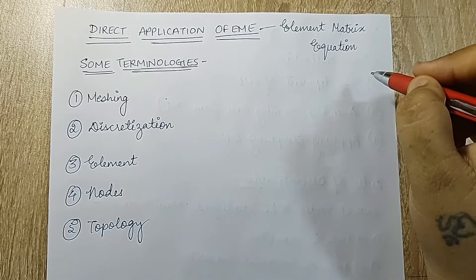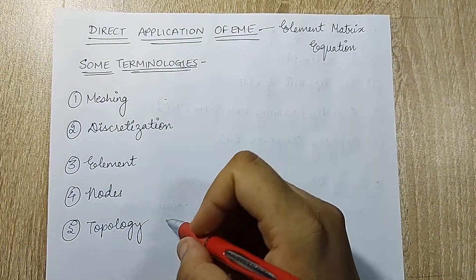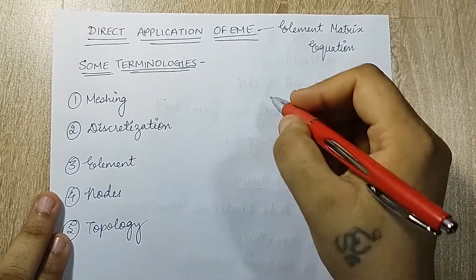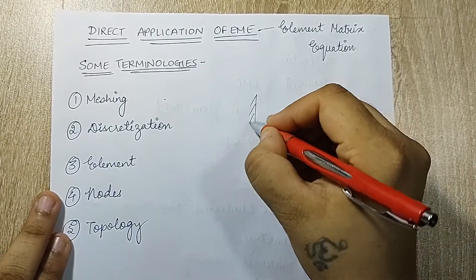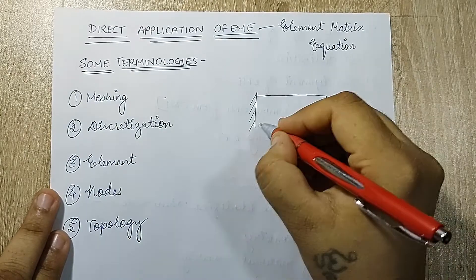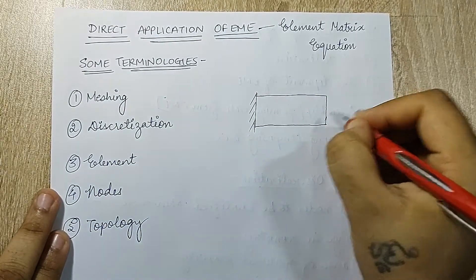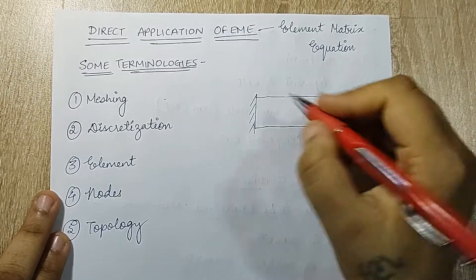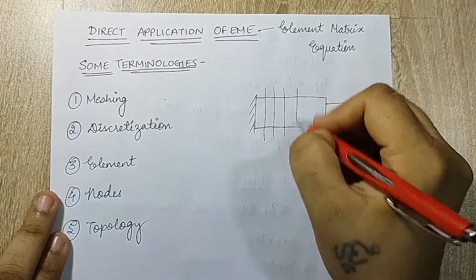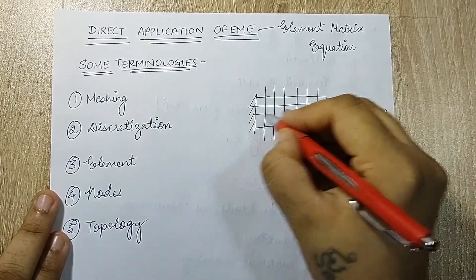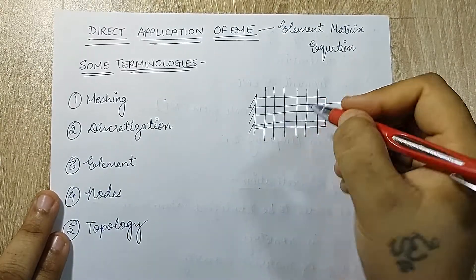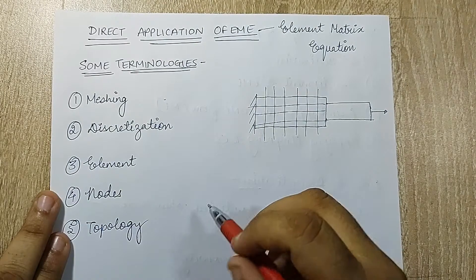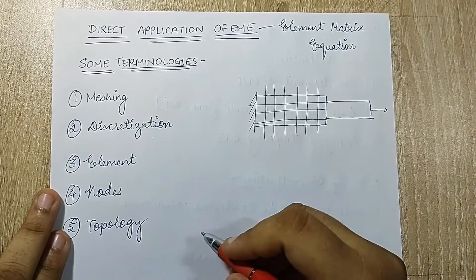I will be telling you about some terms I am going to repeatedly use in this chapter. The first one is meshing. Suppose I am analyzing a step bar in FEA — the procedure of solving this bar is by dividing it into horizontal and vertical lines. These are called meshes and the process is called meshing.